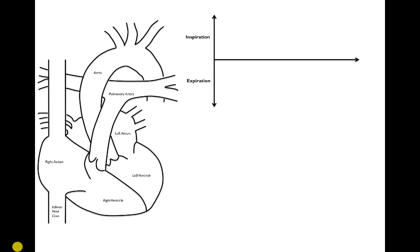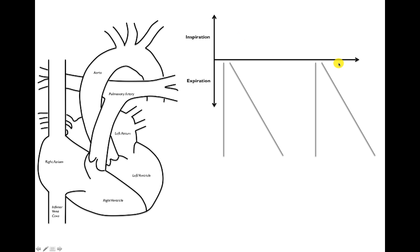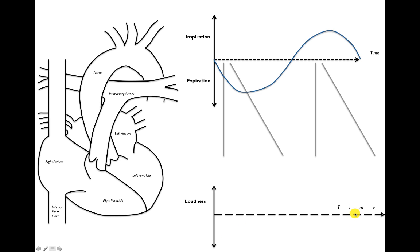This is the diagram we're going to use to think through this — here's the heart, and then we're going to draw a respirogram. If the curve goes up, that's inspiration; if the curve goes down, that's expiration. We're going to blow up two specific areas and plot that over time, and on the bottom is going to be the phonocardiogram — what the heart sounds like. The time scale of how often the heart beats, maybe 60 or 70 beats per minute, is much faster than how often you respire, which is say 12 or 14 times a minute.